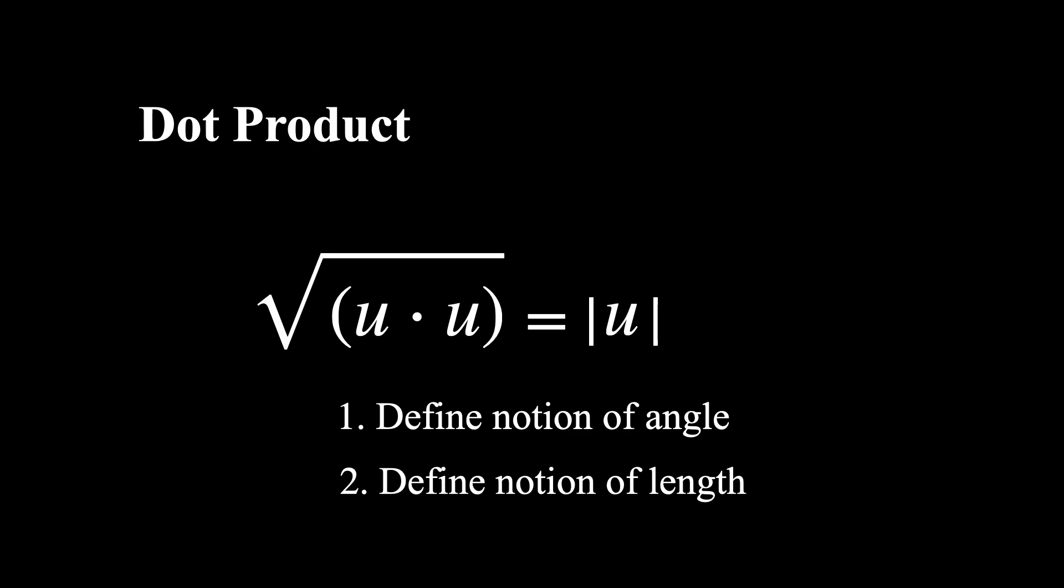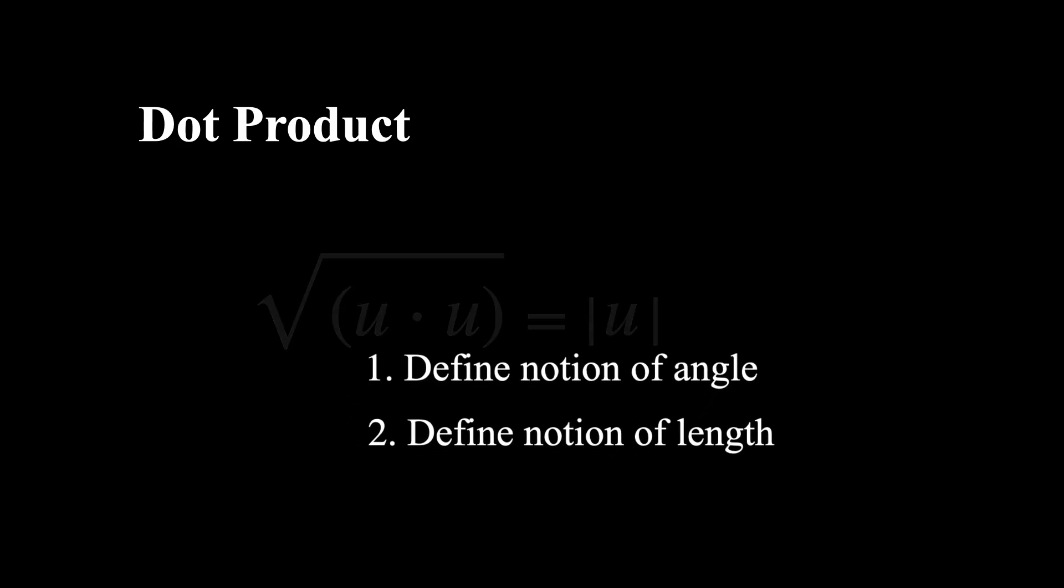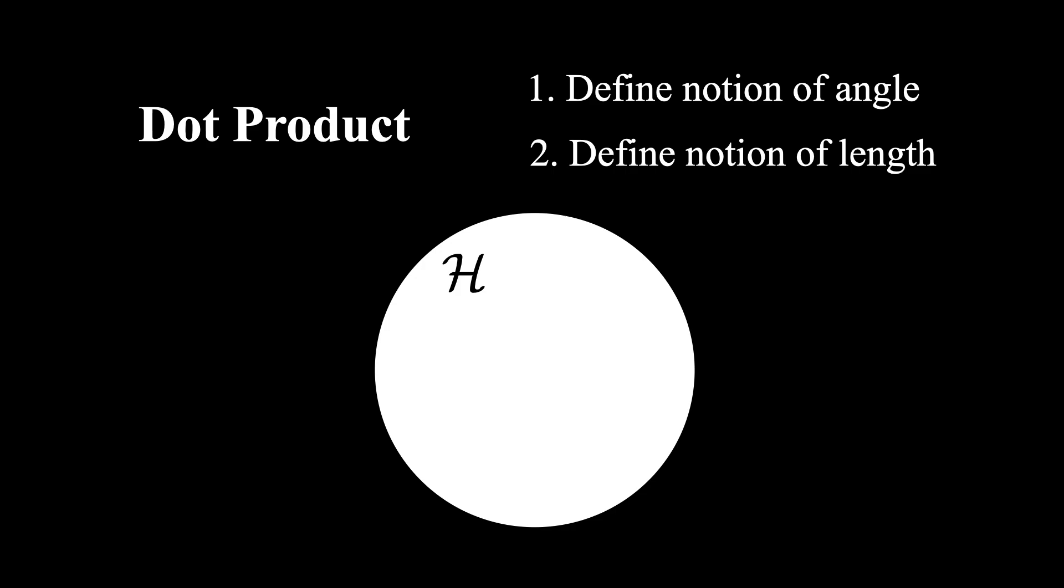And so the length of u can then be defined as the square root of the dot product. So this means that simply by having the definition of the dot product first, one could use this to define the angle between two vectors, and also define the length of a vector. This may seem like a pedantic and pointless exercise when considering 3D space,